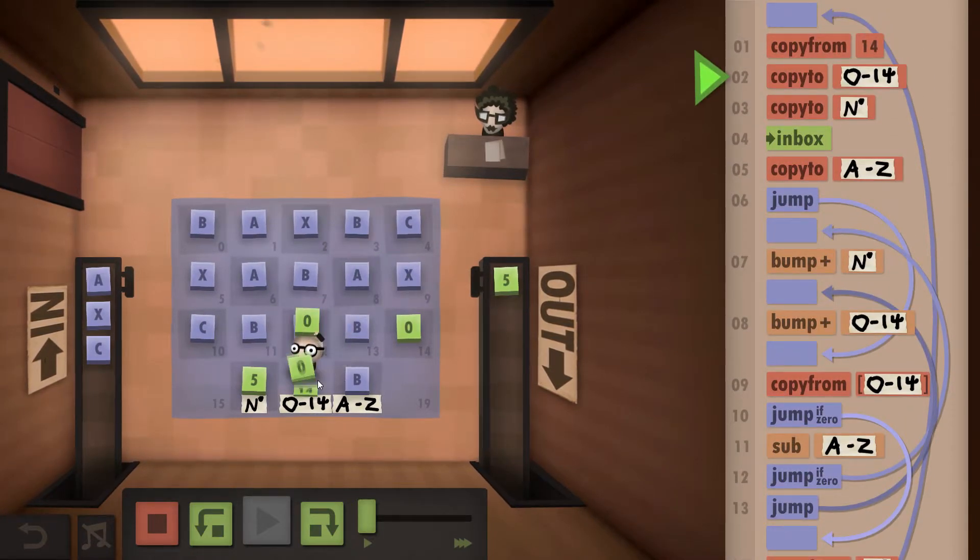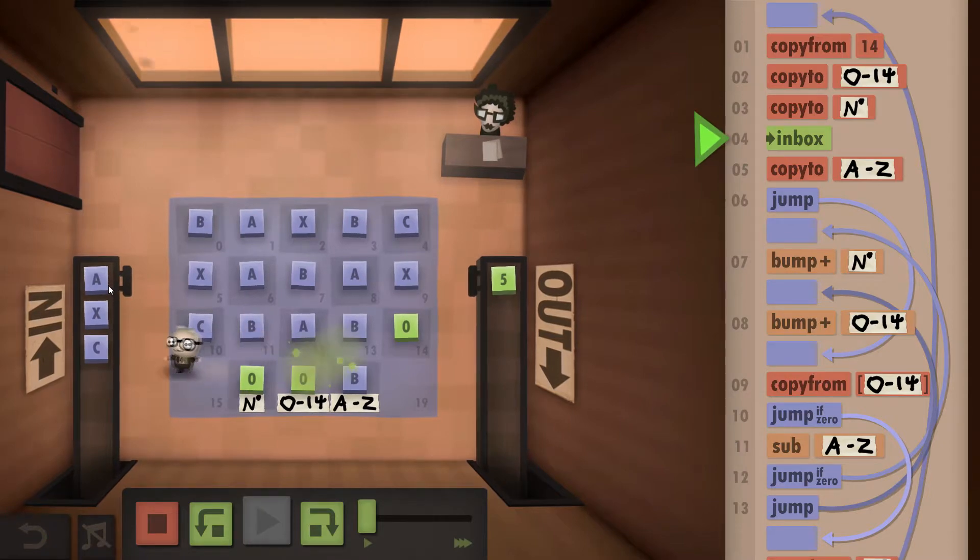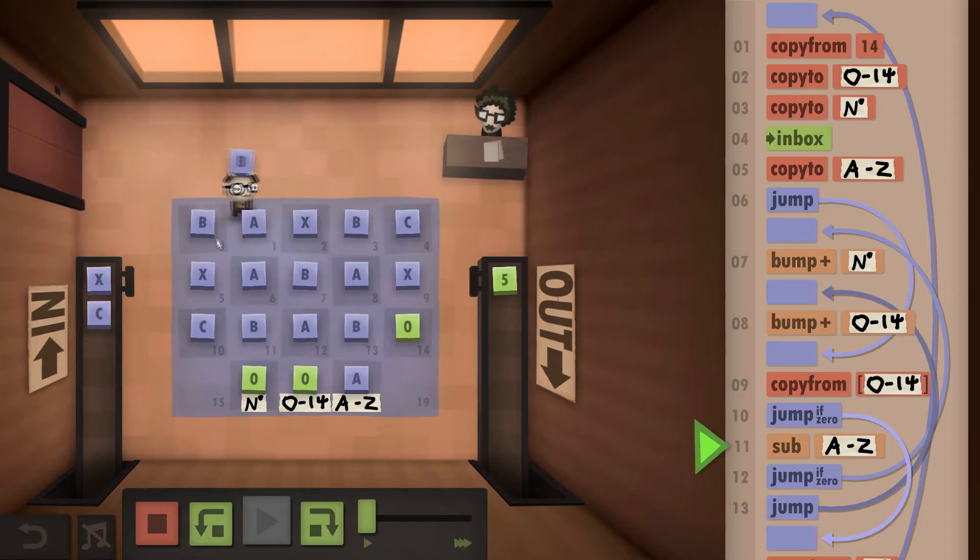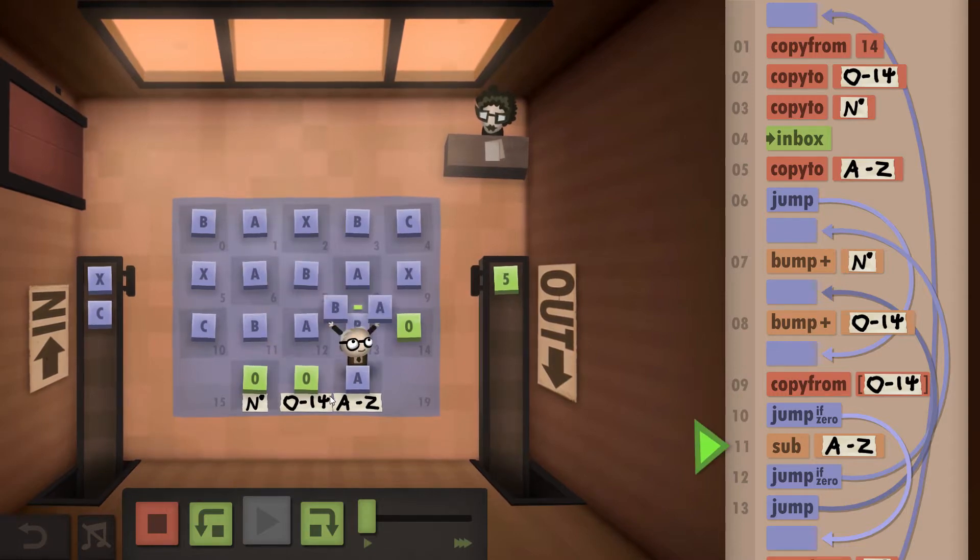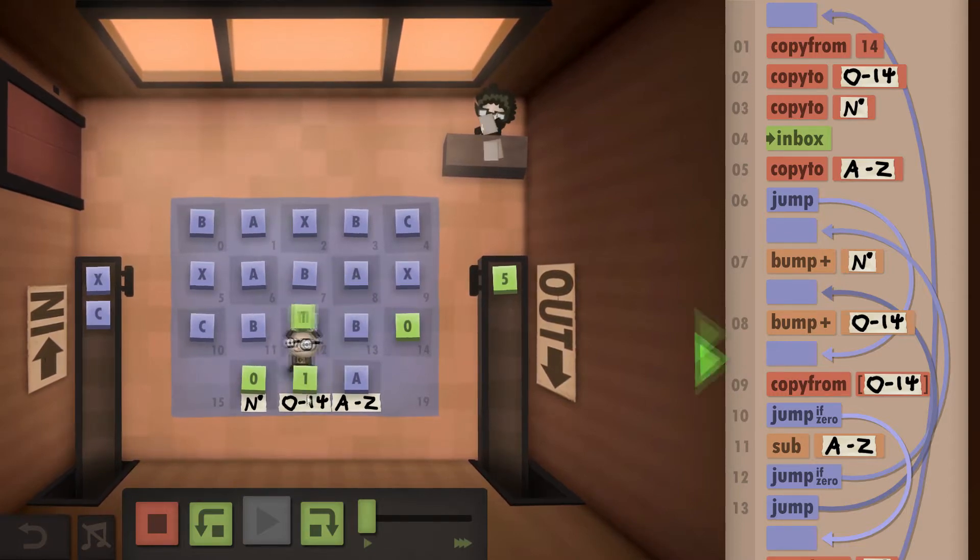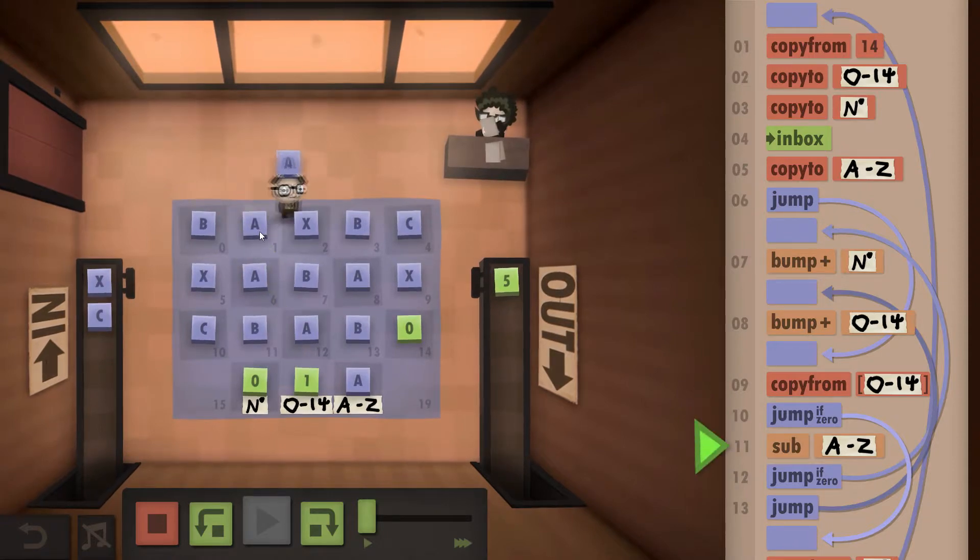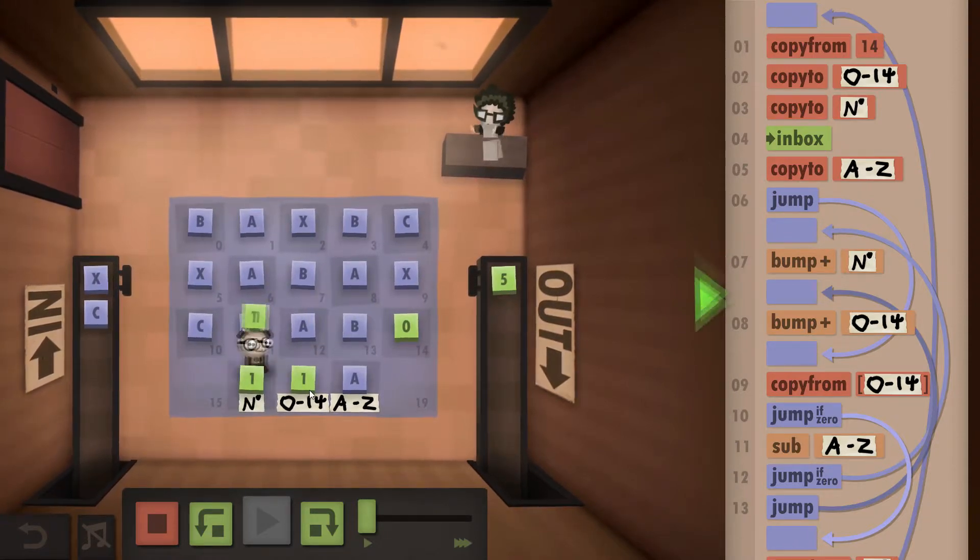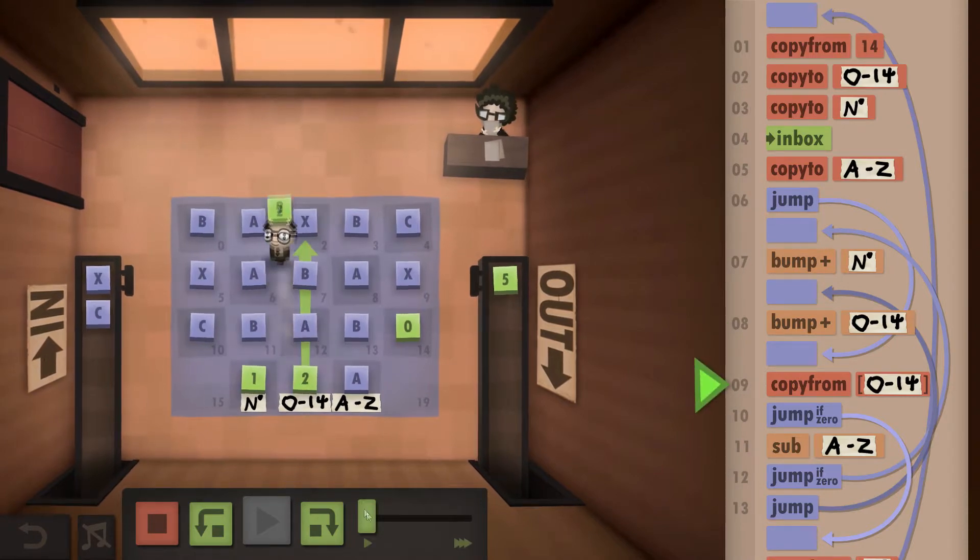We're now going to reset the track and grab the A and start the whole process again. So we're going to compare against the B - it is not the same. Grab one, and now I'm going to do the whole thing again. The A is obviously going to be the same, so we're going to bump that to one, check the letter two and keep going.